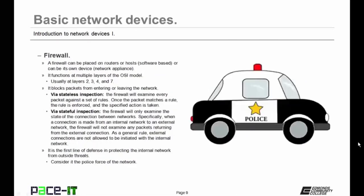Speaking about firewalls, a firewall can be placed on routers or hosts, which would mean that it would be software-based, or a firewall can be its own device — usually a network appliance. Firewalls function at multiple layers of the OSI model; usually you will find them operating at layers 2, 3, 4, and 7. Firewalls block packets from entering or leaving the network, and it can do this through one of two methods.